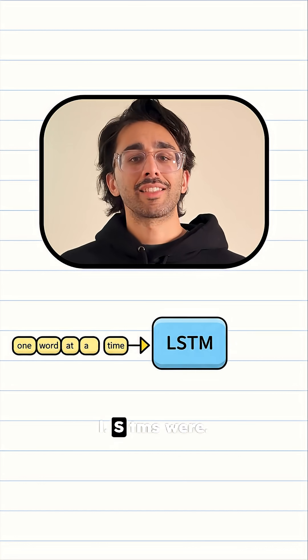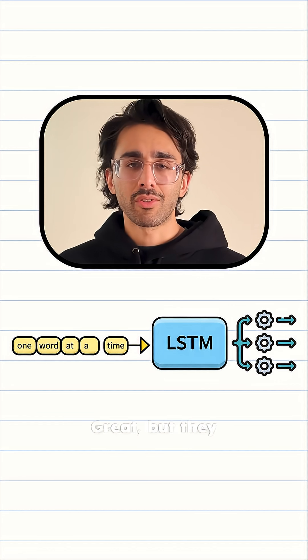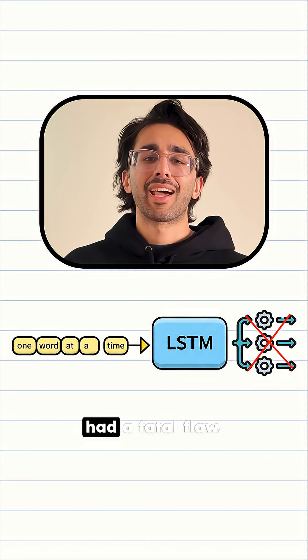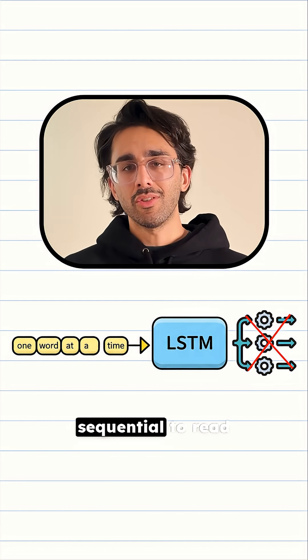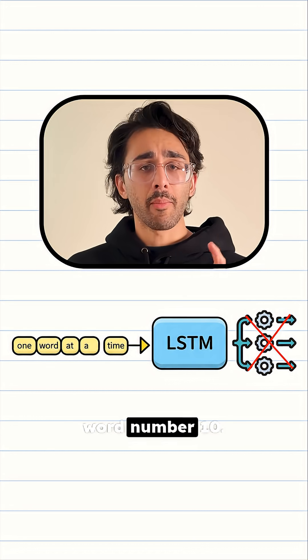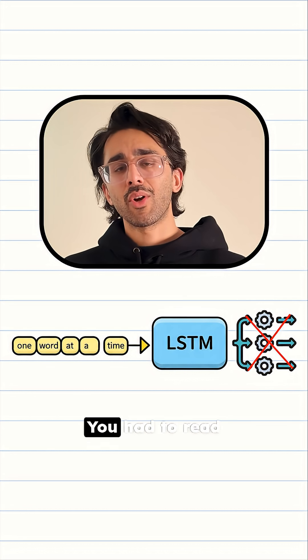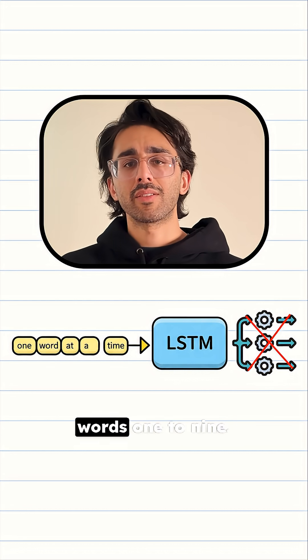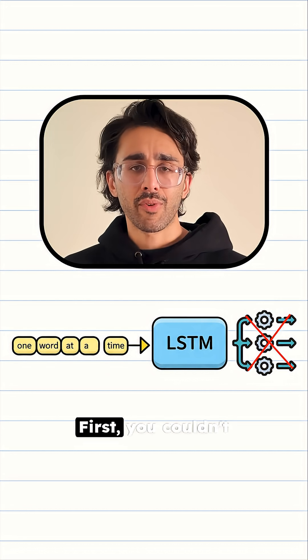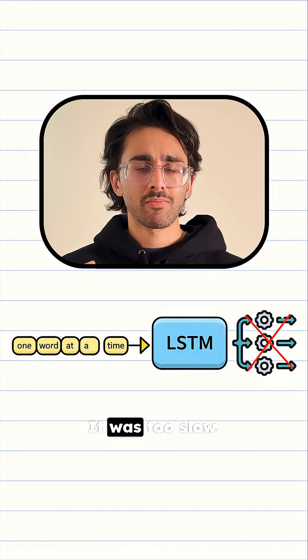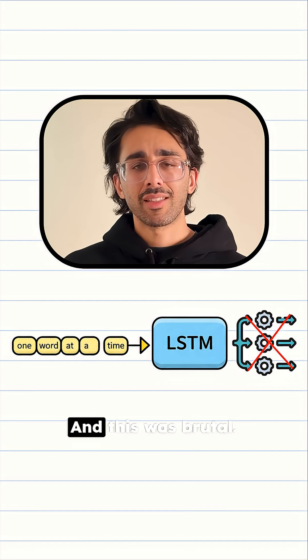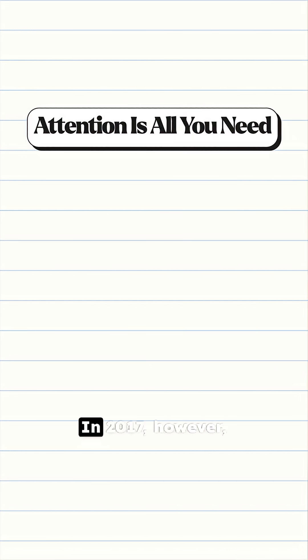The old heroes — LSTMs — were great, but they had a fatal flaw: they were sequential. To read word number 10, you had to read words 1 through 9 first. You couldn't just run them in parallel on GPUs. It was too slow, and this was brutal.